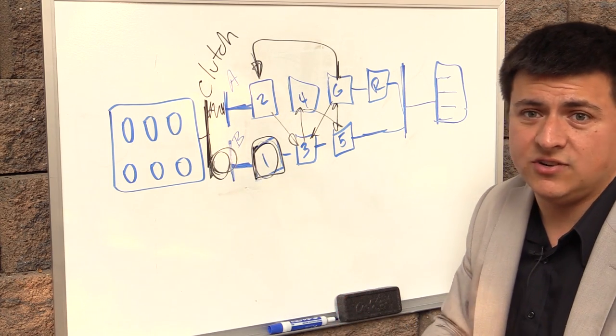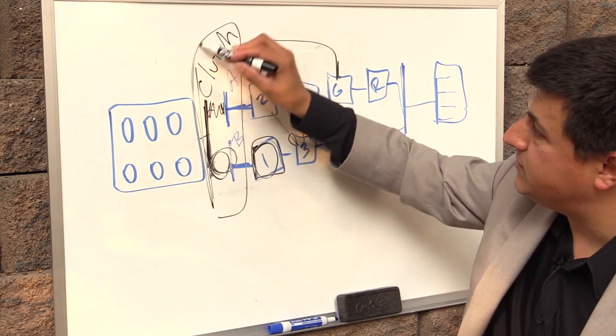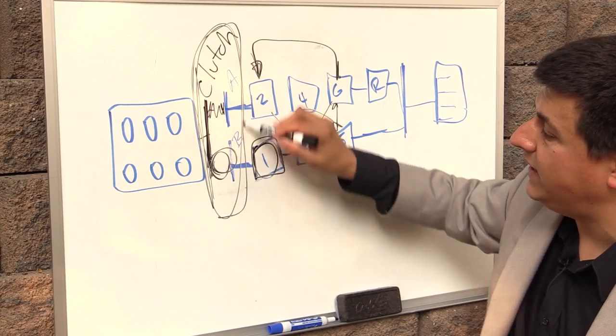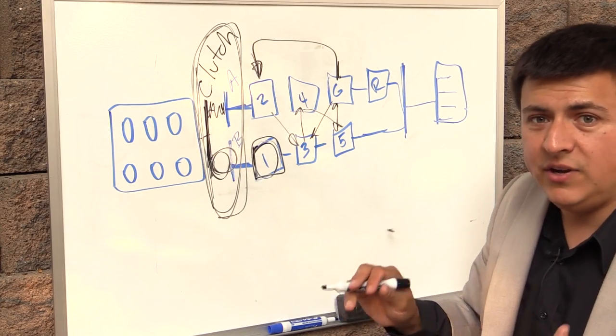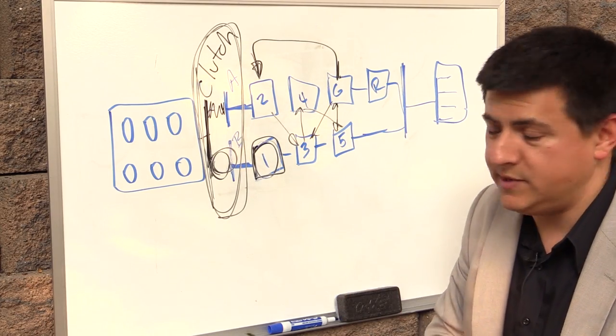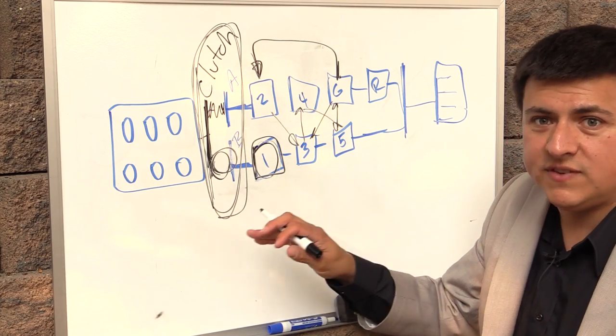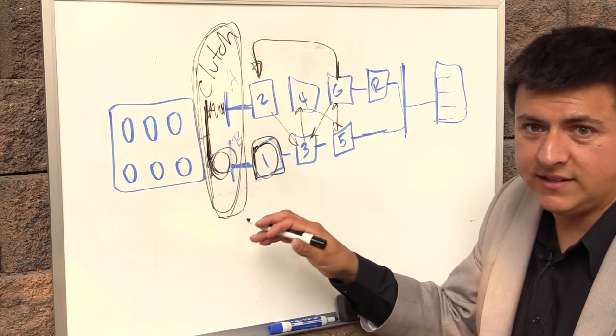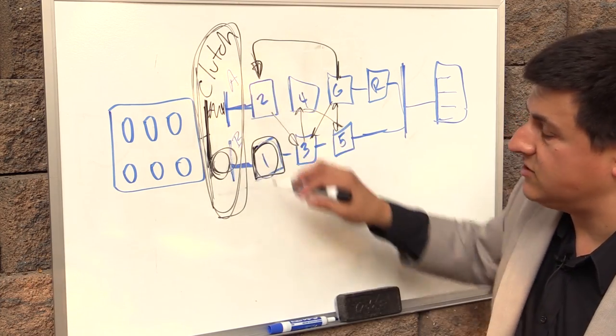That does result sometimes in a jerkier feel. Now some dual clutch transmissions put this entire clutch area right here inside a fluid bath and we call those wet clutch dual clutch transmissions. You'll find those in most Audi products, a lot of Volkswagen products. Those have a wet clutch arrangement.